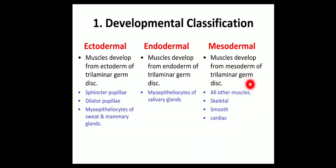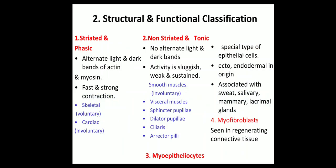The mesodermal muscles develop from the mesoderm of the trilaminar germ disc — for example, the skeletal, smooth, and cardiac muscles. Now you should know what myoepitheliosites are. Myoepithelial cells are mainly present in the exocrine glands, above the basement membrane, and they are responsible for the expulsion of secretions from the exocrine glands. When they contract, the secretions are expelled from the exocrine glands.